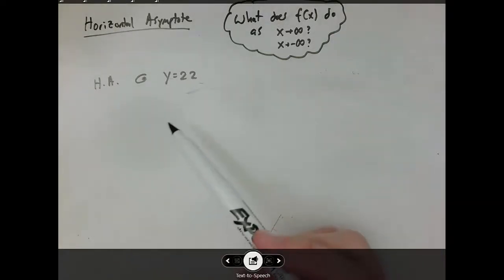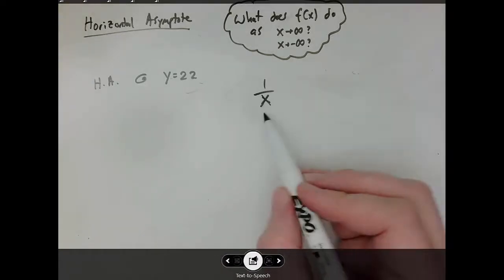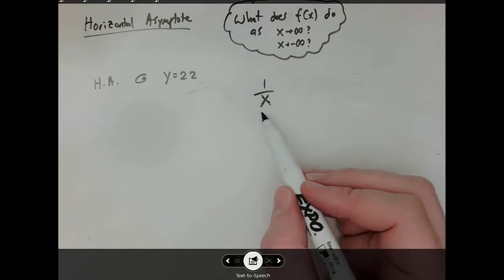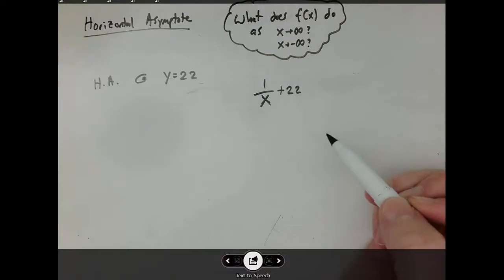If I asked you to provide an example of a function with a horizontal asymptote at y equals 22, a really easy thing to do would be start with a function whose horizontal asymptote is at zero, and then shift it up by 22. And now you're done.